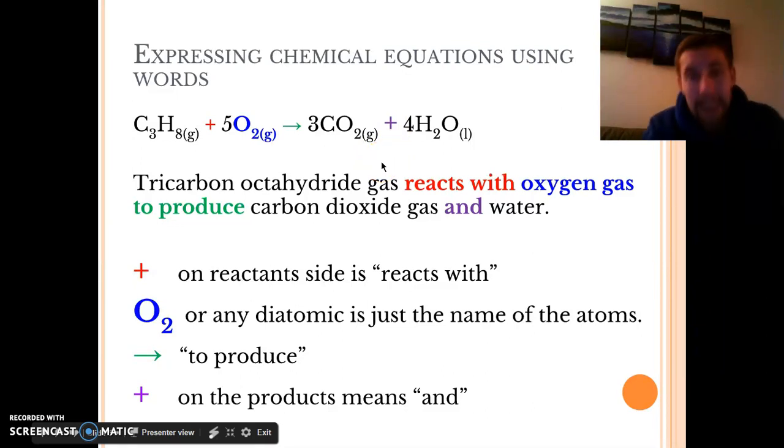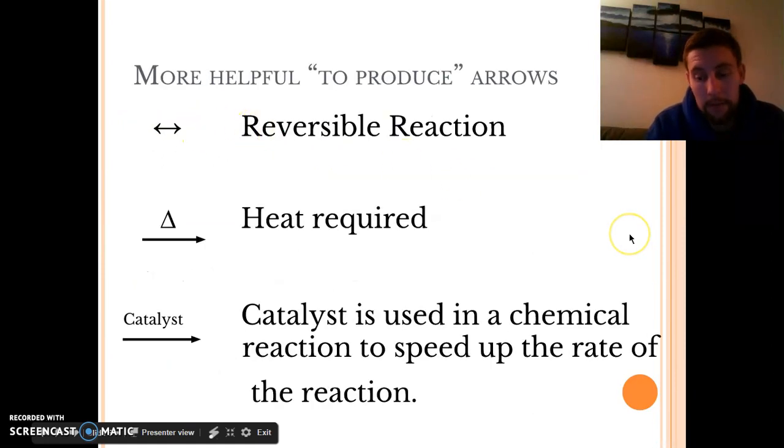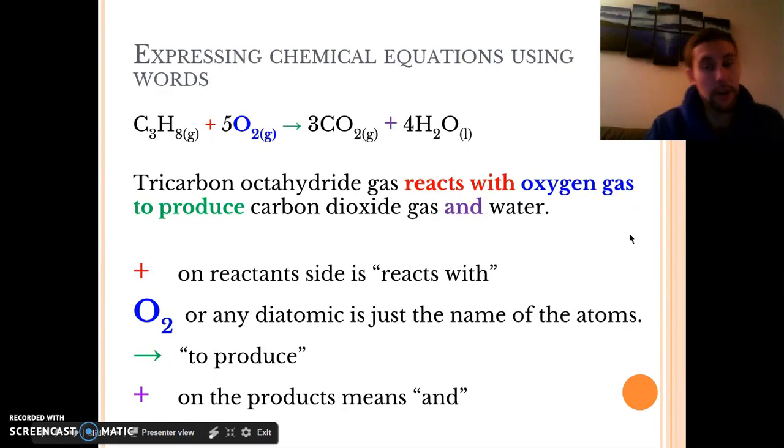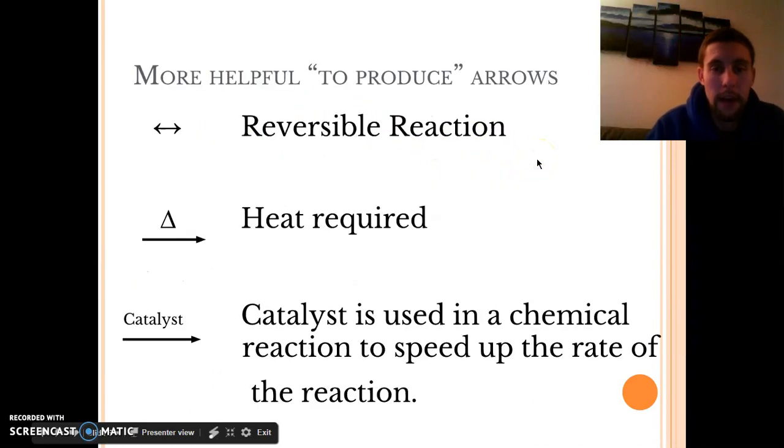Then these are your products over here. The plus on the product side means and. This thing is made and this thing is made. But on the reactant side, this is reacting with, or reacts with, the other thing. Make sure you got all those pieces, all these color-coded. These are your reactants, products over here. You're reacting together to produce products on the product side, the right side.